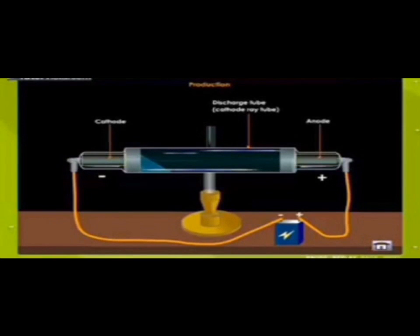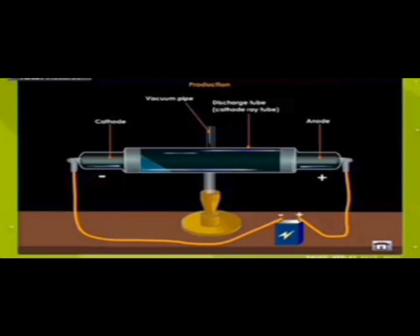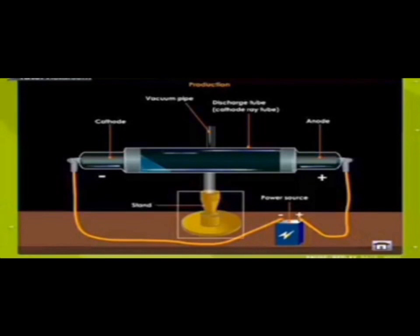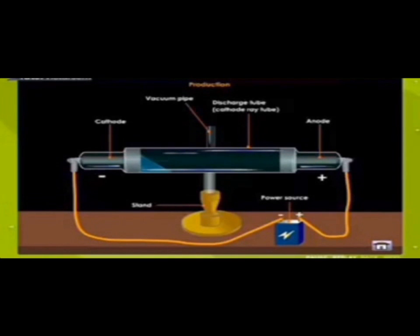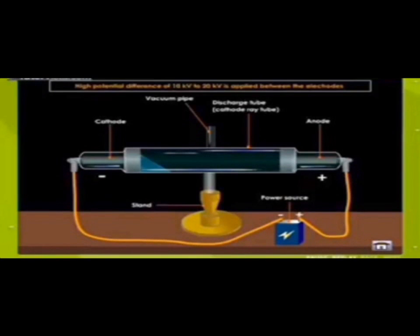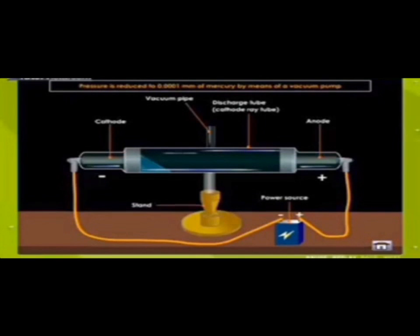Now let us see the production of cathode rays. Cathode rays are produced in a discharge tube, hence the discharge tube is generally referred to as the cathode ray tube. The cathode ray tube is a partially evacuated glass tube with cathode and anode placed at the ends of the tube. A vacuum pump is used to partially evacuate the tube. It was found that electric discharge through gases took place only when the pressure inside the tube is lowered and the potential difference between the electrodes was high. To produce cathode rays, a high potential difference of 10 kV to 20 kV is applied between electrodes.